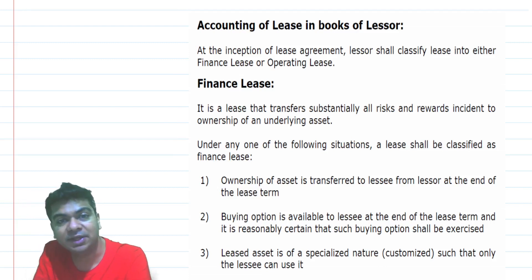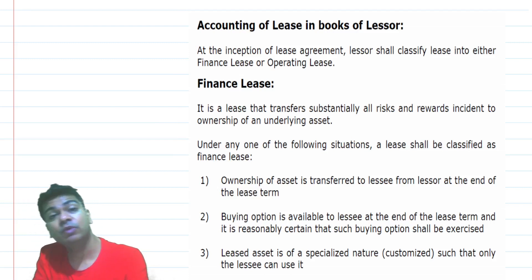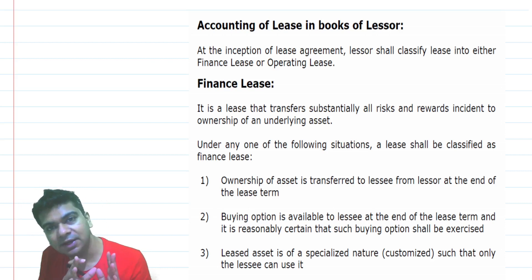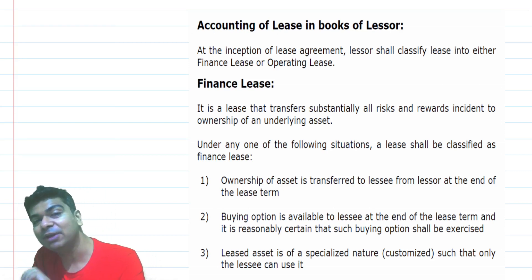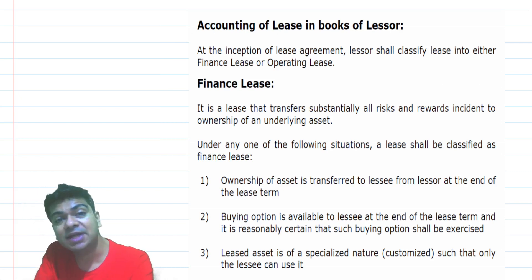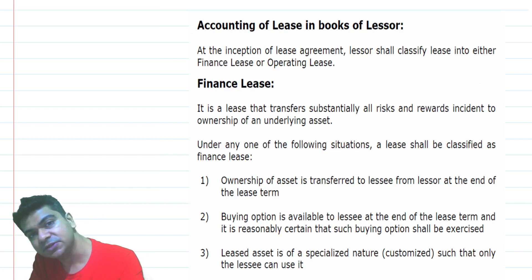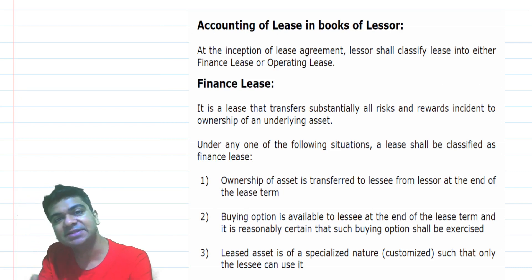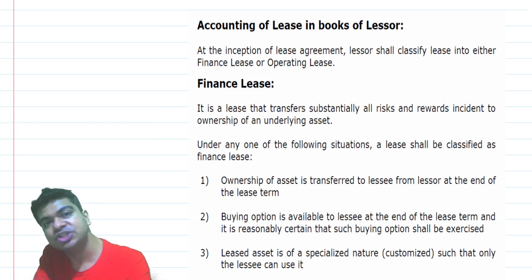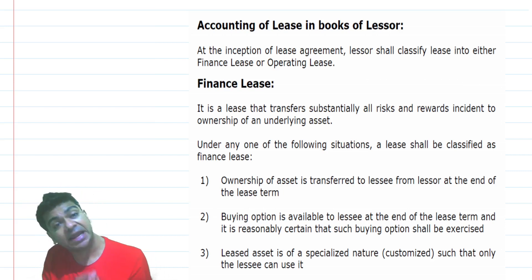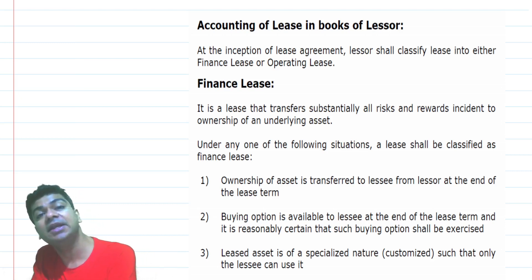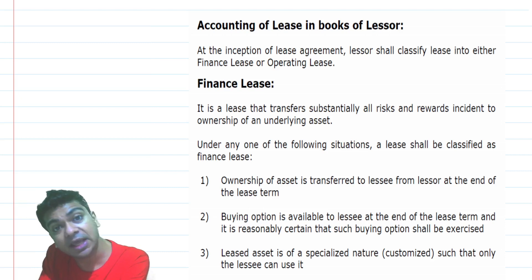So far we have been discussing the accounting of the lease in the books of the lessee. It's time that we discuss how a lease shall be accounted for in the books of the lessor. The principles of Accounting Standard 19 will finally be applicable. Under Ind AS 116, as far as the lessee is considered, we do not have the concept of finance lease or operating lease. But now that we are discussing the books of the lessor, we will look into the classification of the lease. Just like AS 19, Ind AS 116 also identifies leases as finance lease or operating lease in the books of the lessor.